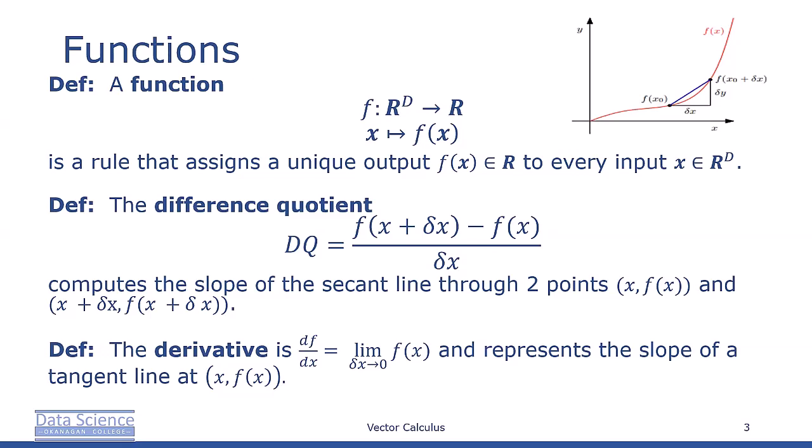Here R^d is called the domain of f, and the function values f(x) are the image or codomain of f. We often write f: R^d → R to specify a function that maps things from R^d into R.